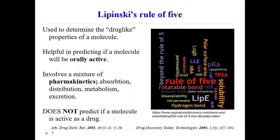This rule involves a lot of pharmacokinetics. The ones that we really talk about are absorption, distribution, metabolism, and excretion — those are the ones that govern most of what we're going to care about. One really important thing to note is that this does not predict if a molecule is active as a drug. It helps predict how it acts in the body — so how it's absorbed by blood and cells and things like that.